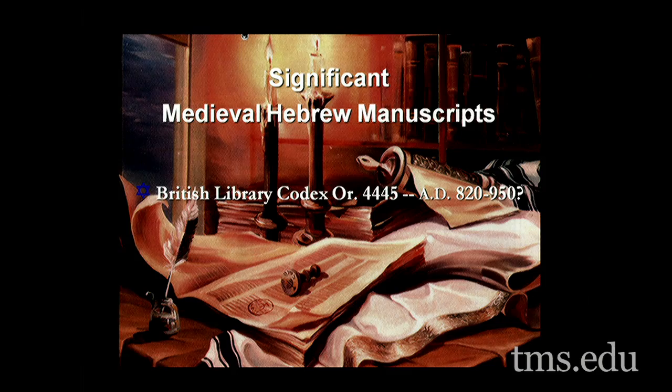What are those medieval Hebrew manuscripts? One of them is the British Library Codex Orientalis 4445 — that was the British Library's accession number and identification for it. It's a manuscript of the Hebrew Bible that dates somewhere between 820 and 950 AD. It is one of the oldest complete manuscripts of the Hebrew Bible in existence. We have very few that are complete — everything from Genesis through 2nd Chronicles.